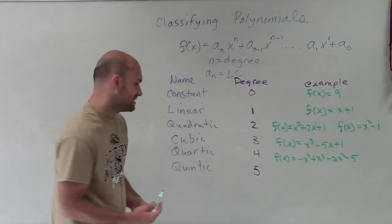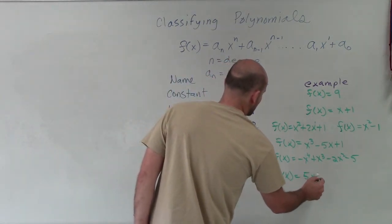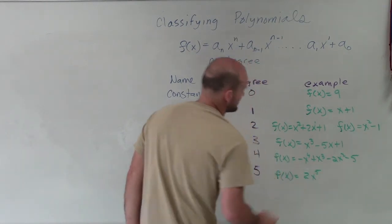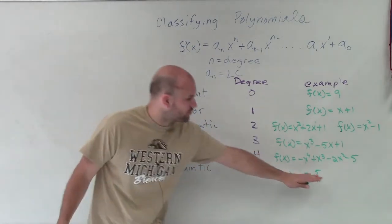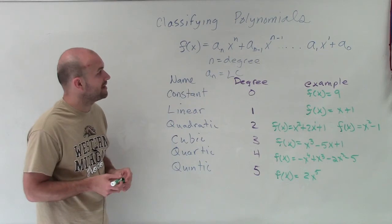And then our quintic, we could have one that could simply just be 5x, let's even do something like this, 2x to the fifth. It has no other terms. It's just one simple monomial. However, the degree of this polynomial is 5. Therefore, it's a quintic polynomial.